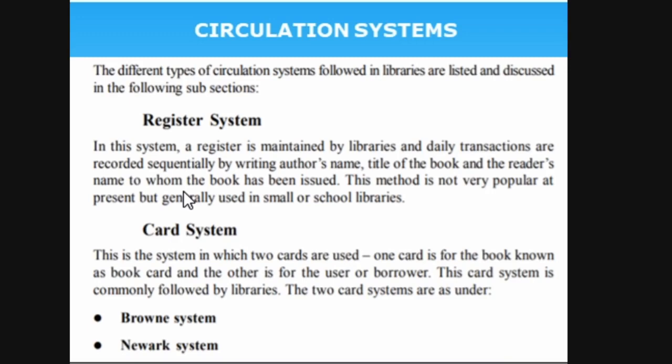The second system is the card system. In this system, two cards are used: one is the book card, kept inside the book, and another is the borrower card — the user's library ID card. The card system is commonly followed by most libraries. There are two types of card system: the Brownie system and the Newark system.